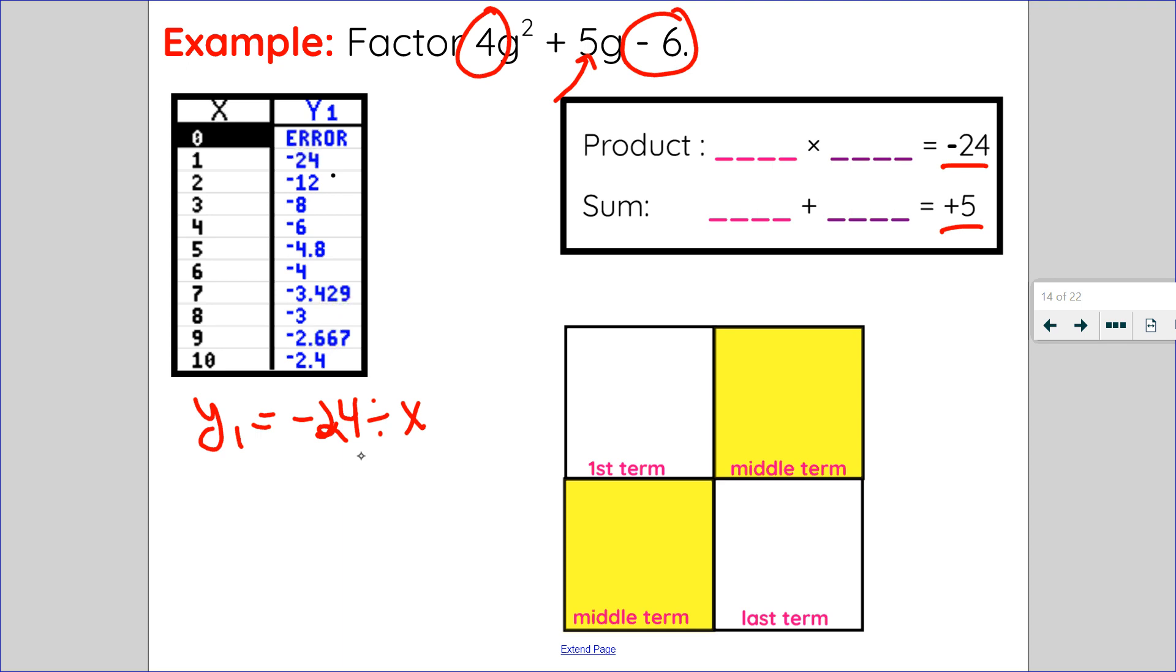So I scan down the list, I'm looking for my integer pairs only, no decimals, and I see that this factor pair here is the one that I think works. So positive 8, negative 3, positive 8, negative 3.